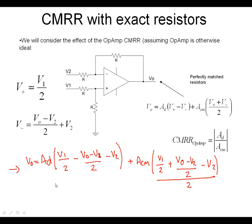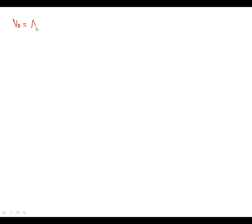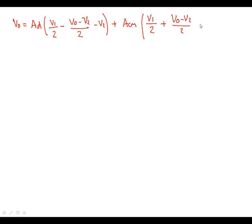So this is our starting point for working out what's going to happen for the operational amplifier, assuming all the resistors are absolutely perfect with no tolerance — so when a 1K resistor is used, it is exactly 1K. Moving to our next page, we expand out that term. Vout equals differential mode gain into V1 over 2, minus Vout minus V2 over 2, minus V2 — plus the common mode term with Vout minus V2 over 2, plus V2, all divided by 2.